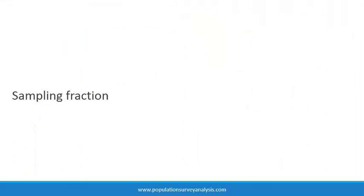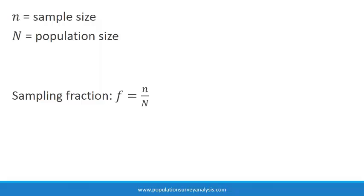In sampling terminology, we call this the sampling fraction. The sampling fraction F is equal to small n, the sample size, divided by big N, the population size.